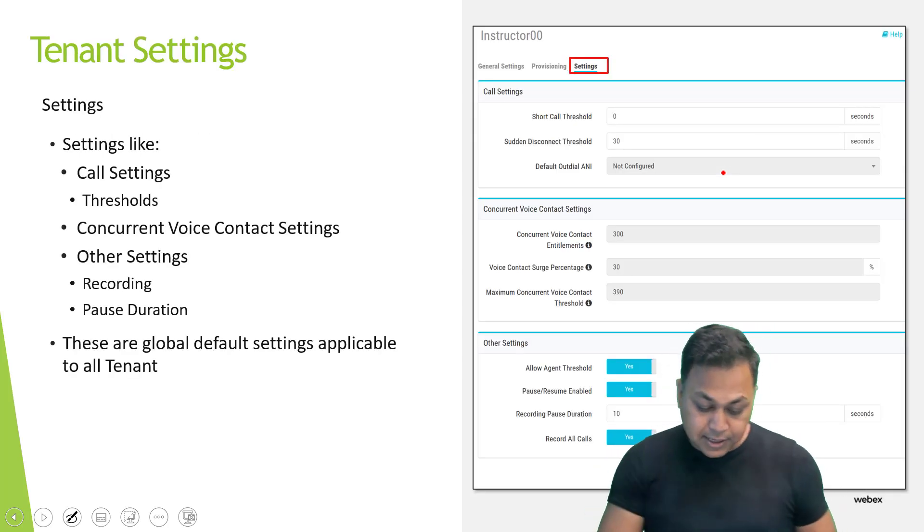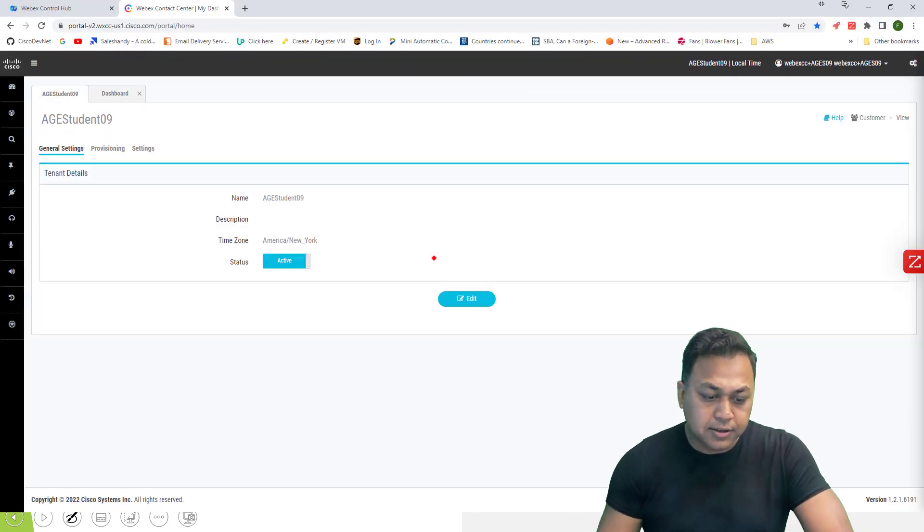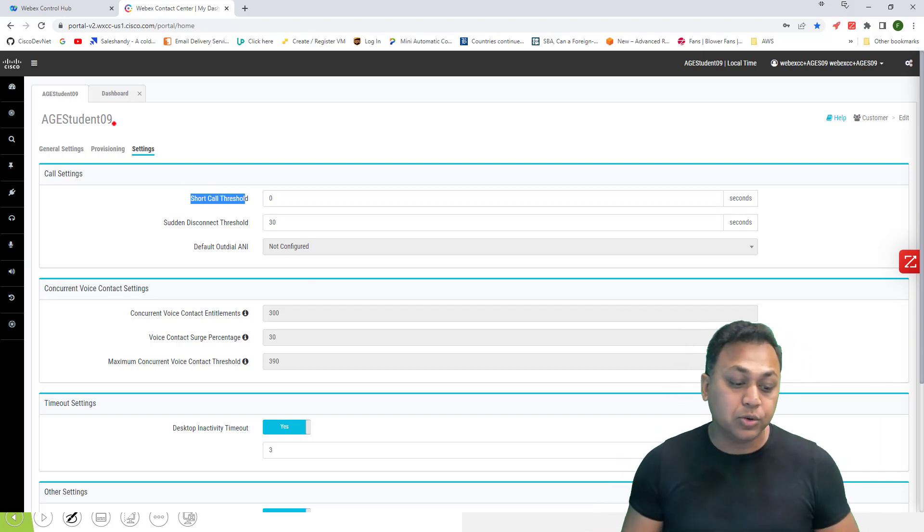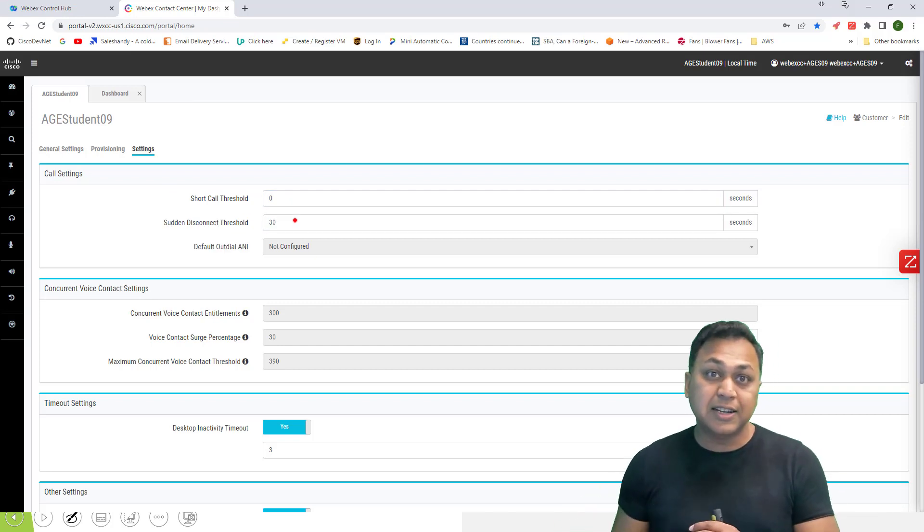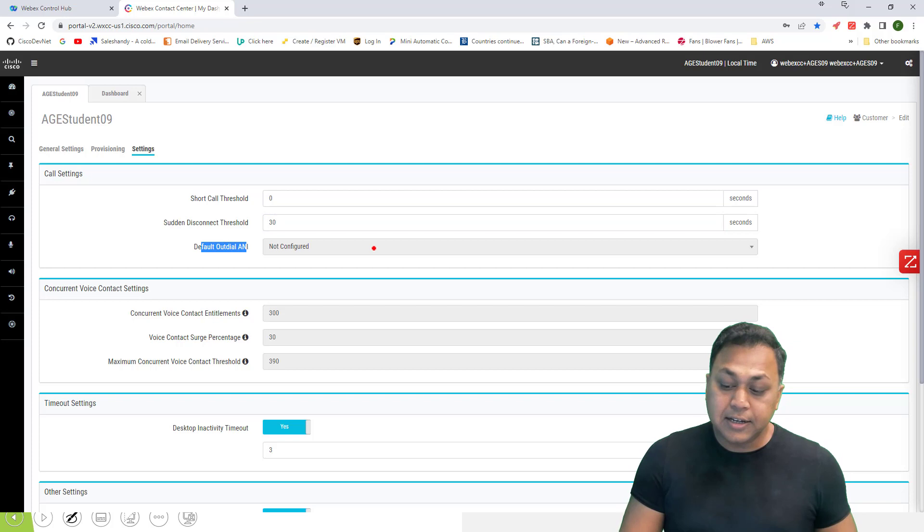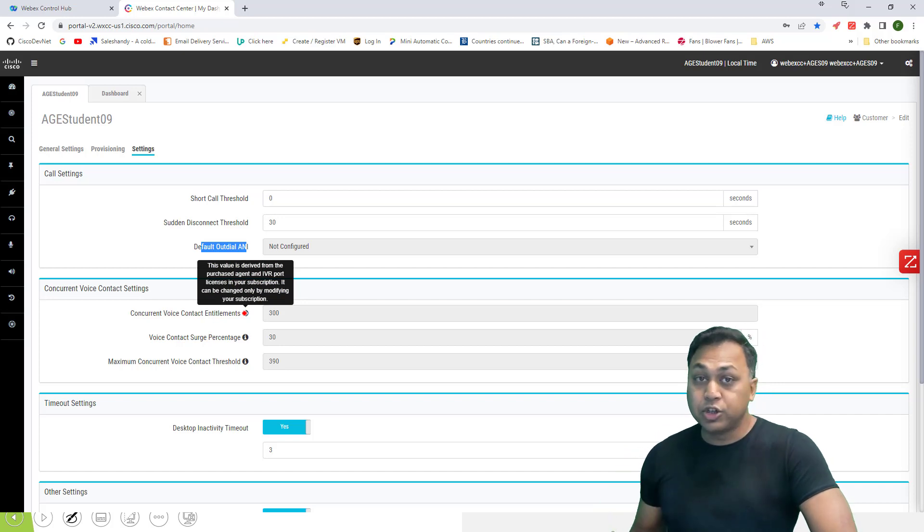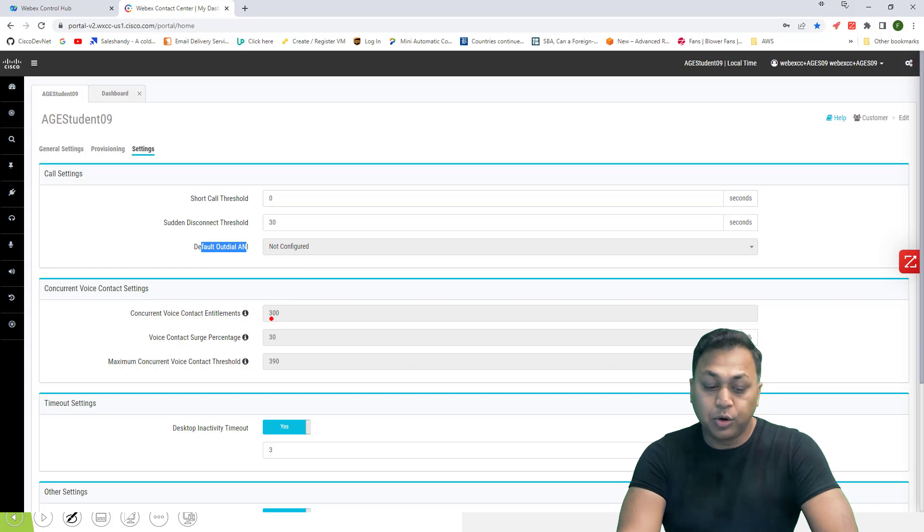Let's go take a look at what a tenant configuration will look like. I'm right now on this tenant configuration. If my time zone is correct, as you can see, I can click on edit. And I can change some settings that will go to the settings particular tabs. Here I can say short call threshold. Maybe if a call lasted for 30 seconds or 15 seconds, it can be configured as a short call. And if a sudden disconnect threshold, 30 seconds, if it disconnects within the 30 seconds, maybe consider as a sudden disconnect threshold. Any default outbound ANI, if it is configured, you will be able to select this, but only if you have the privilege to do so. Concurrent voice contact enhancement. This is value that is derived from the purchase of the agent. How many agents you have purchased. In this example, it has been set to 300.